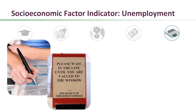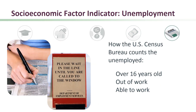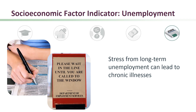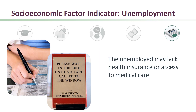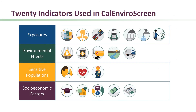The U.S. Census Bureau counts people who are over 16 years old, out of work, and able to work as unemployed. Stress from long-term unemployment can lead to chronic illnesses such as heart disease and can shorten a person's life. People who are unemployed may lack health insurance or access to medical care. This concludes our review of indicators that make up CalEnviroScreen.